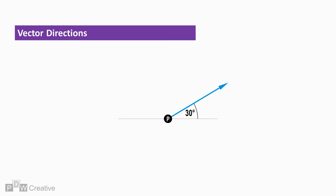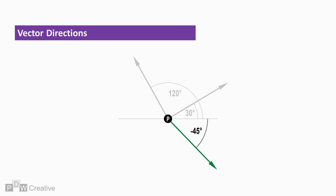A positive force acting at 30 degrees can be drawn to scale with a secondary force acting at 120 degrees. A negative force acting at minus 45 degrees would look as shown. A negative force acting at minus 170 degrees would look as shown.